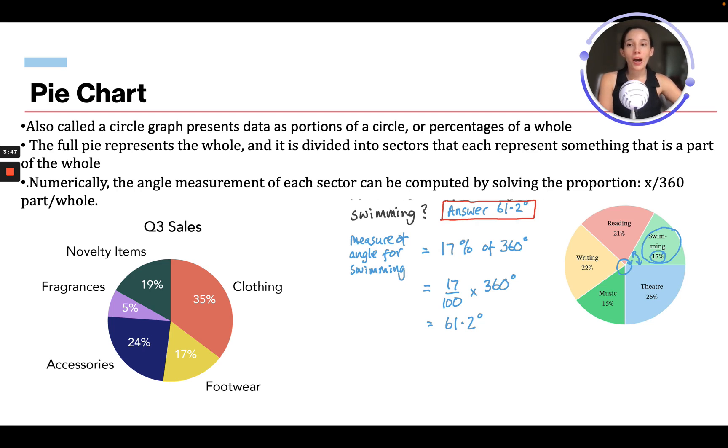So there's also a pie chart, also called a circle graph, and it presents data as proportions of a circle or percentages of a whole. So if it's using percentages of a whole, the entire circle would be 100%. The full pie represents the whole, and it's divided into sectors that each represent something that is part of the whole. Numerically, the angle measurements of each sector can be computed by solving the proportion of x over 360, because 360 would be the full way around.